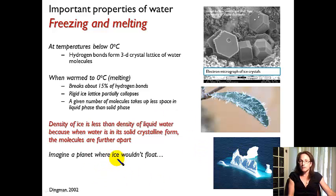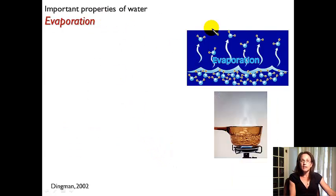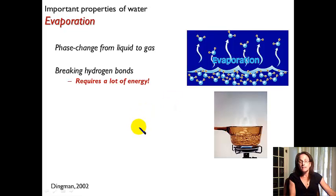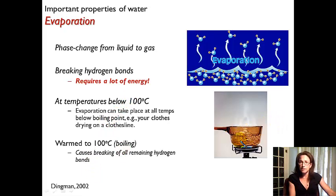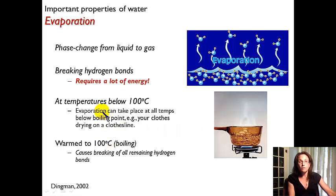Ice floats — and if ice didn't float and a pond froze from the bottom up, we might have a pretty cold planet. Another important phase change is evaporation, which is moving from liquid water to the vapor form. This takes a lot of energy because we are completely breaking a lot of hydrogen bonds to set those water molecules free so they can move into the gaseous form. Evaporation can happen below 100 degrees Celsius — 100 degrees Celsius is the boiling point of water, which means the vapor pressure of the water vapor in the liquid equals the water vapor pressure in the gaseous phase. That's what defines the boiling point, when we break all those hydrogen bonds and release all those water molecules into the gaseous form.